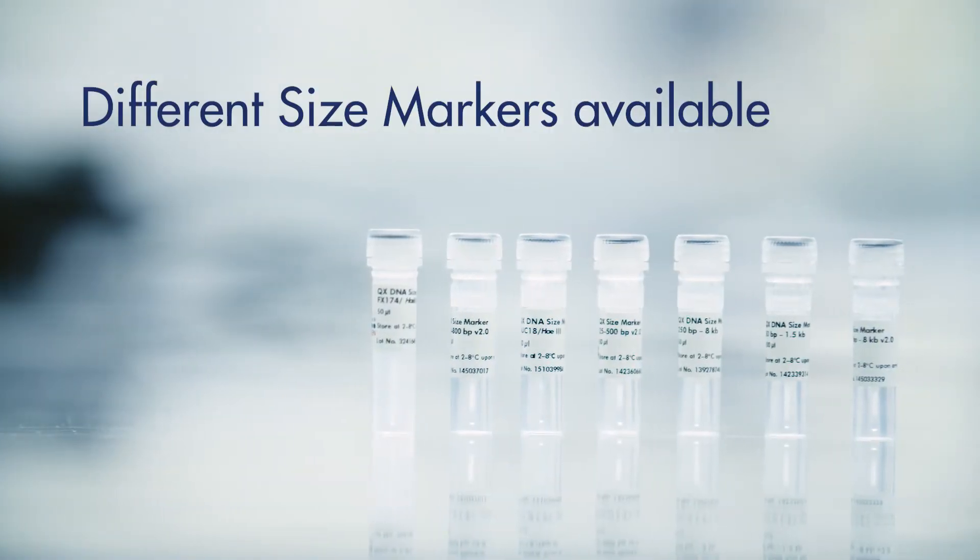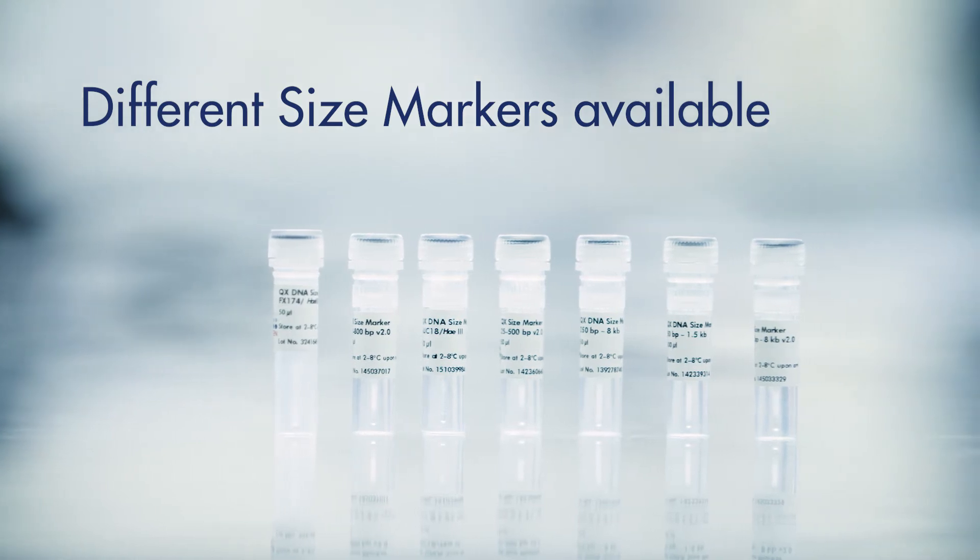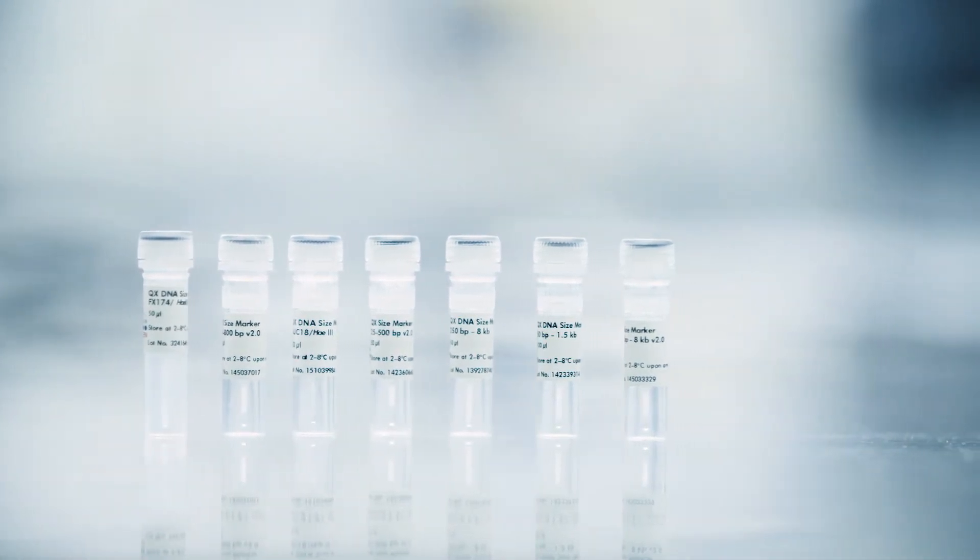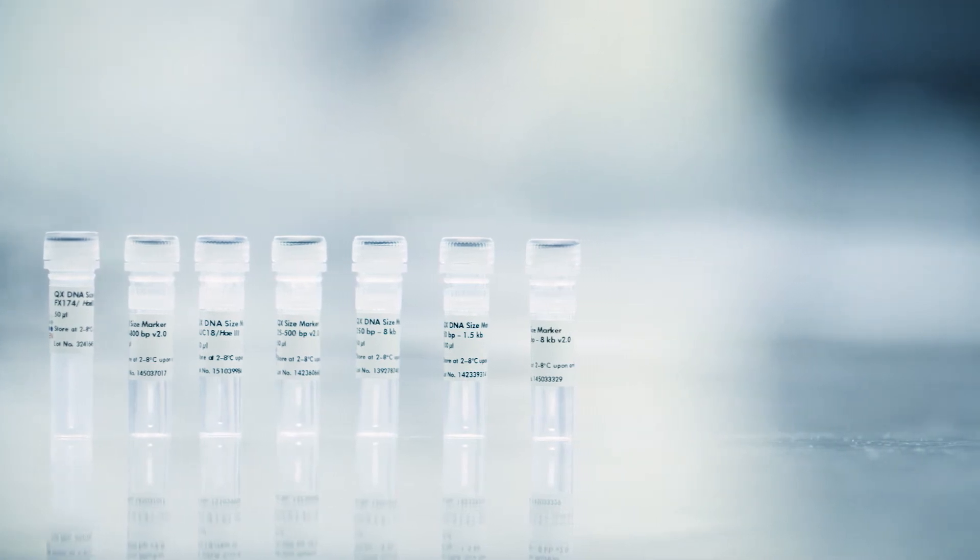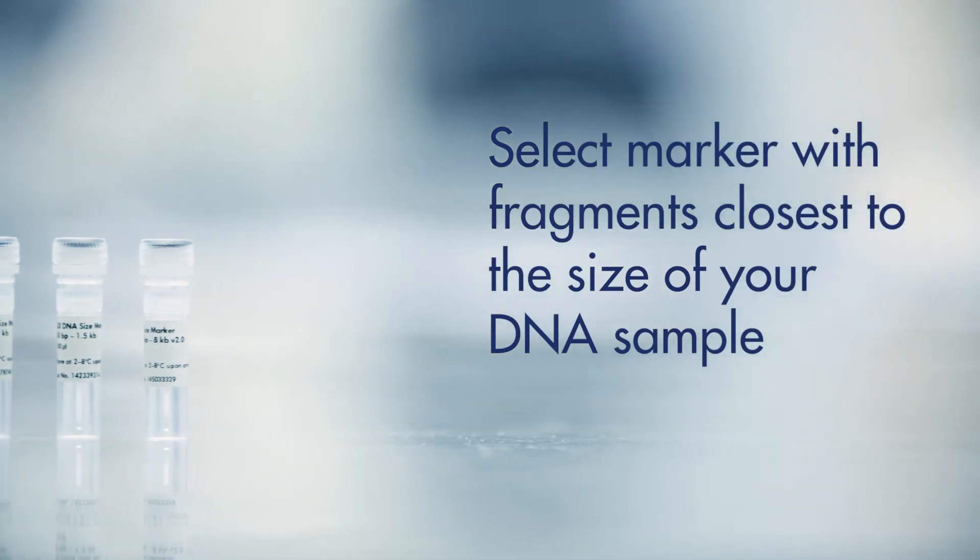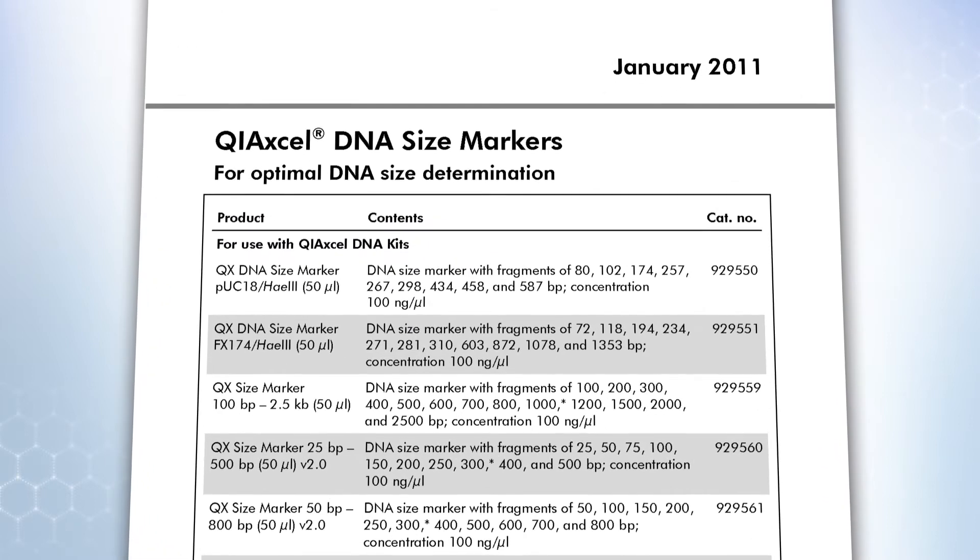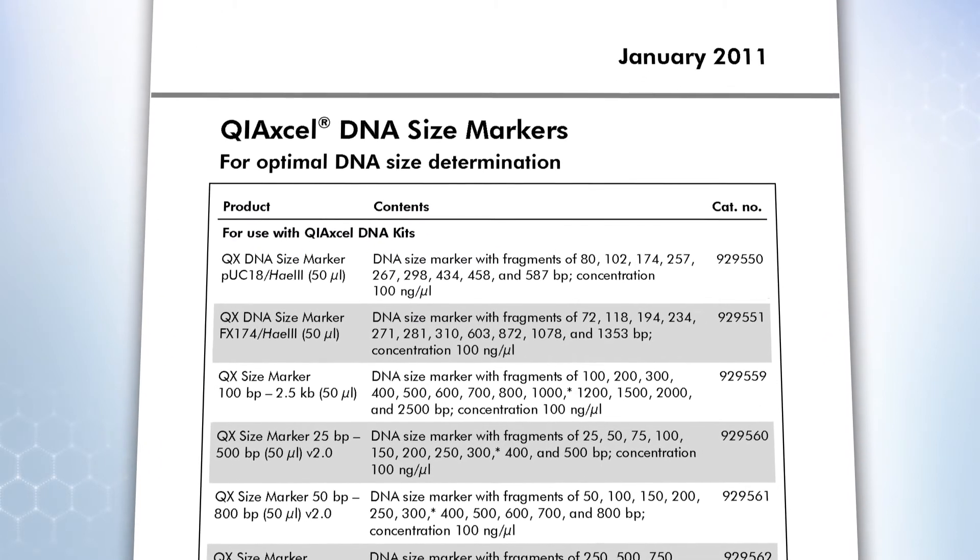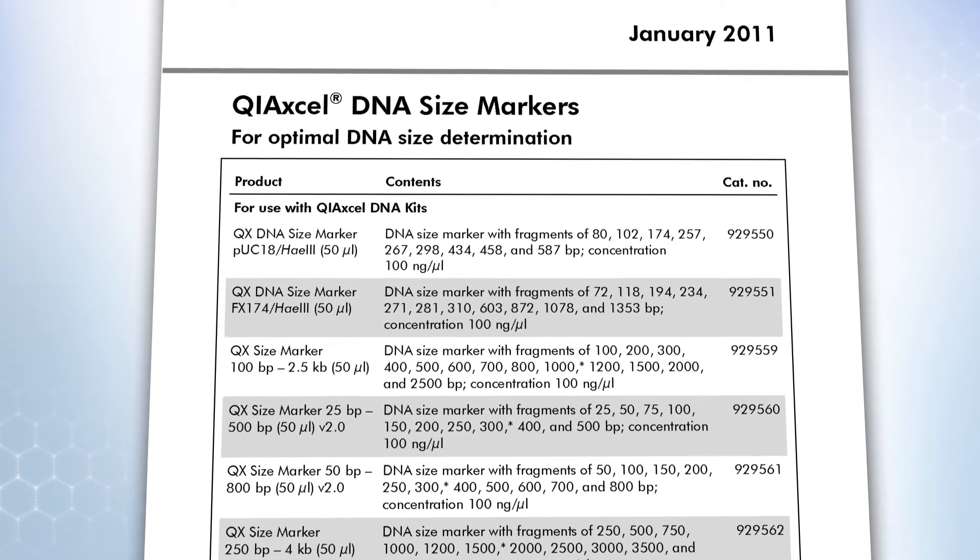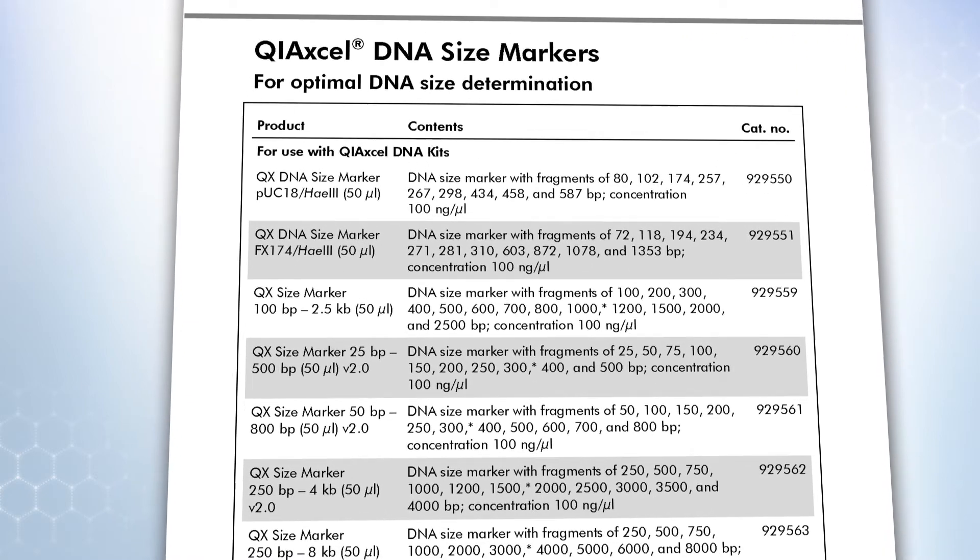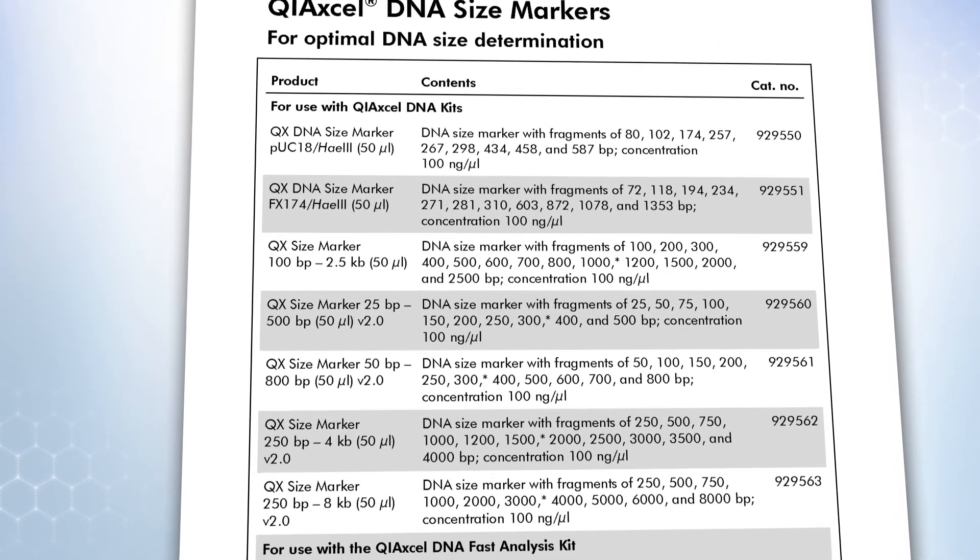There are different size markers available. Depending on the method and alignment marker used and fragment sizes being analyzed, the appropriate size marker is selected. For optimal DNA size determination, select the size marker with fragments closest to the size of your DNA sample. After having performed a run with size marker included, it is possible to create and save a reference marker, which can be applied in future runs when using the same cartridge and method, without having to run the size marker again.